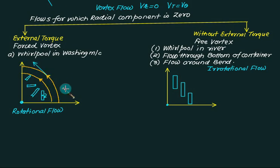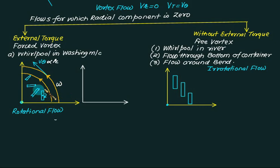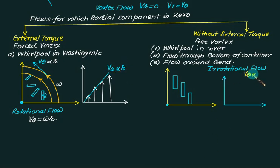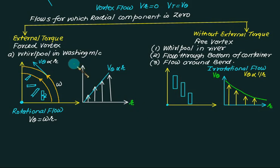The tangential velocity v_theta in forced vortex is proportional to r, given by v_theta = omega × r. Since all particles rotate at constant omega (rigid body motion), the graph of v_theta versus r is a straight line passing through the origin and increasing linearly. In free vortex, v_theta is inversely proportional to r — when r is small, v_theta is very large. The graph follows a rectangular hyperbola.